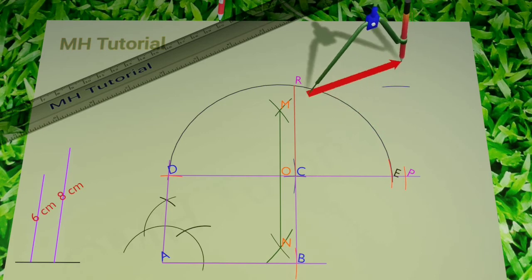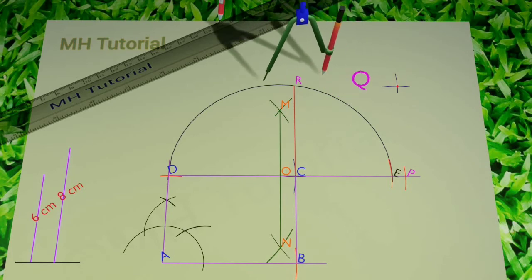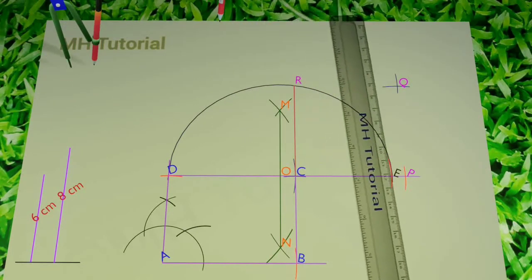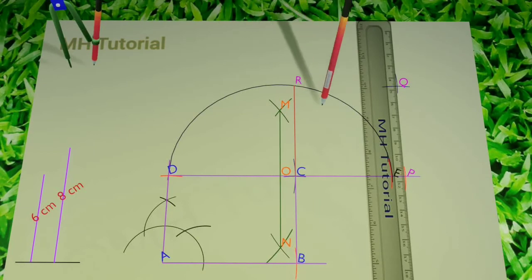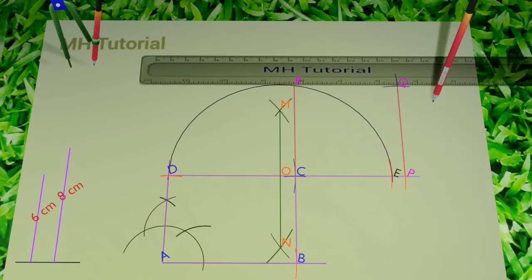Then a circle arc of radius equal to CR is drawn from point P. Also, another circle arc of same radius is drawn from point R. The two arcs meet at the point Q. Now with the help of scale and pencil, point P and point Q are connected.